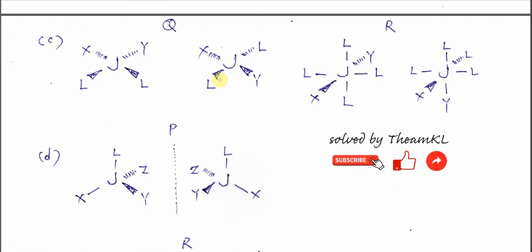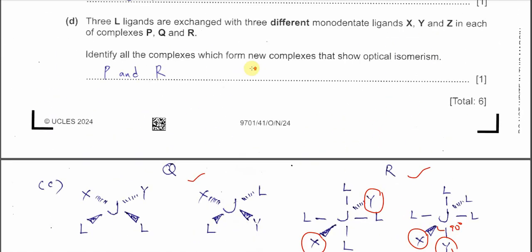For complex R, when two of the L ligands are exchanged by X and Y, the X and Y could be in this arrangement at different sites. This is considered trans. If now the L ligands are exchanged by X and Y in this position, the X and Y are at the same site, the bond angle between them is 90 degrees. So this is cis. So Q and R can form this geometrical isomerism.